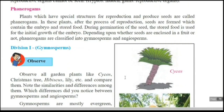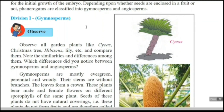Yesterday we discussed the introduction to the classification of plants — why it is necessary, which are the different criteria for classification. According to that chart, we discussed the first sub-kingdom, the cryptogames, and the division of cryptogames: thylophyta, bryophyta, pteridophyta, their characteristics and diagrammatic representation. All these things we discussed yesterday.